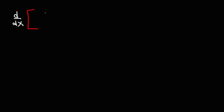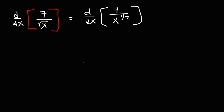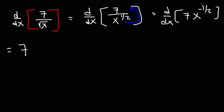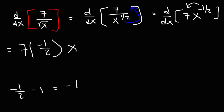Now let's find the derivative of 7 divided by the square root of x. The square root of x is the same as x to the 1 half, and we need to move the x variable to the top before we can use the power rule. So we have the derivative of 7 times x to the negative 1 half. We move the negative 1 half to the front and then subtract negative 1 half by 1. Changing negative 1 to negative 2 over 2 for common denominators: negative 1 minus 2 is negative 3, so negative 1 half minus 1 is negative 3 over 2.